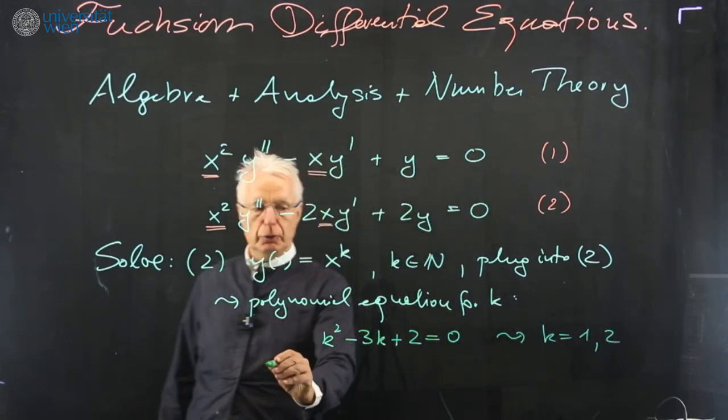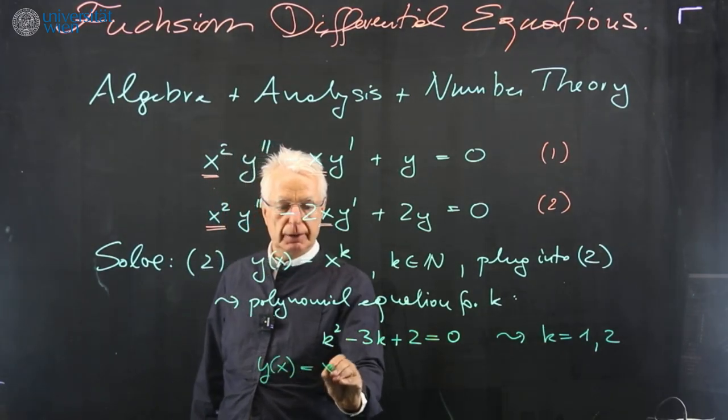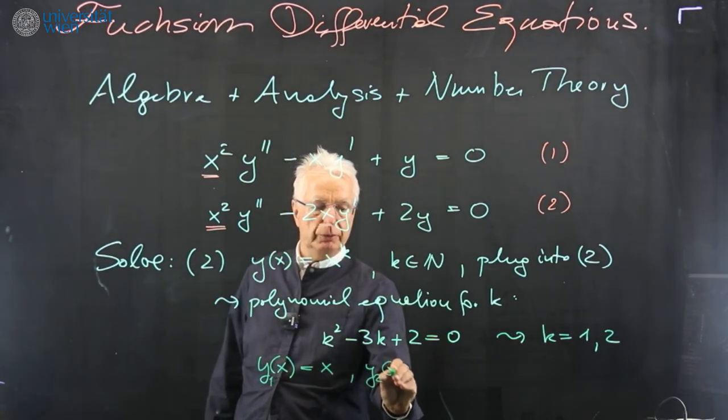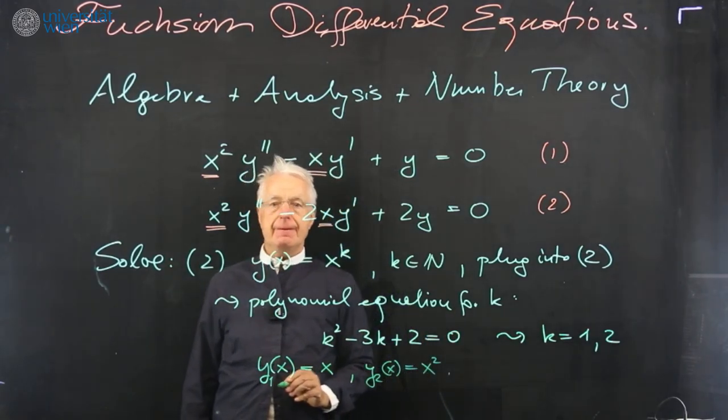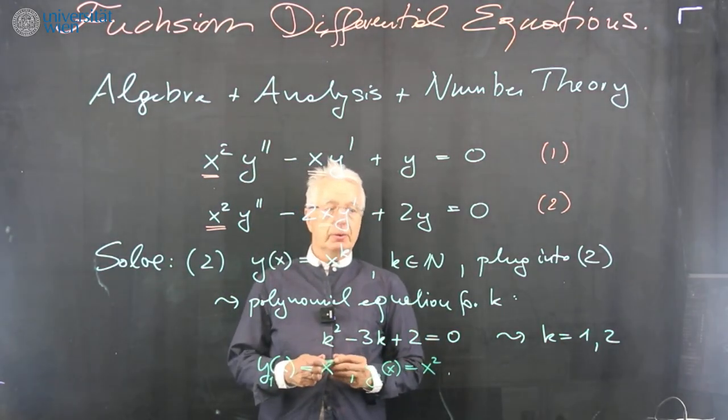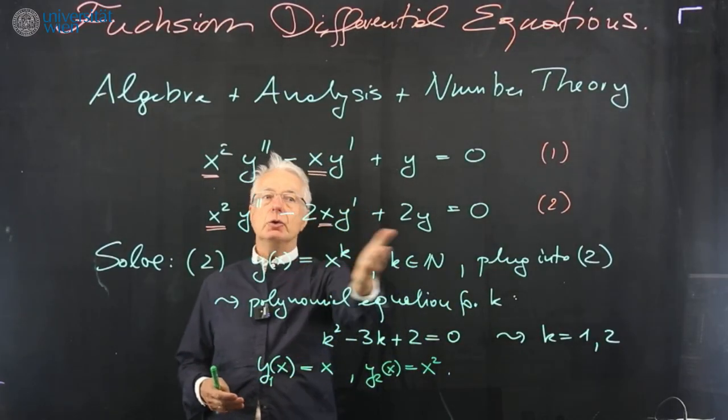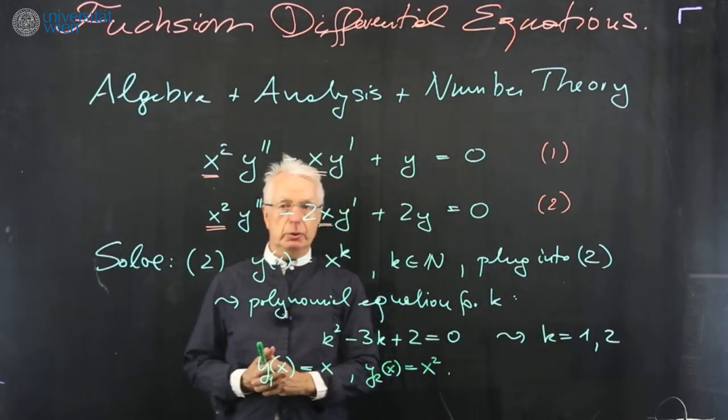And so our solution will be y of x. You have two solutions, either x or y of x, let me call it y1. Y2 of x equals x squared. So that's just almost by guessing, this is an answer. You don't even need a whole power series. You just have a monomial solution.